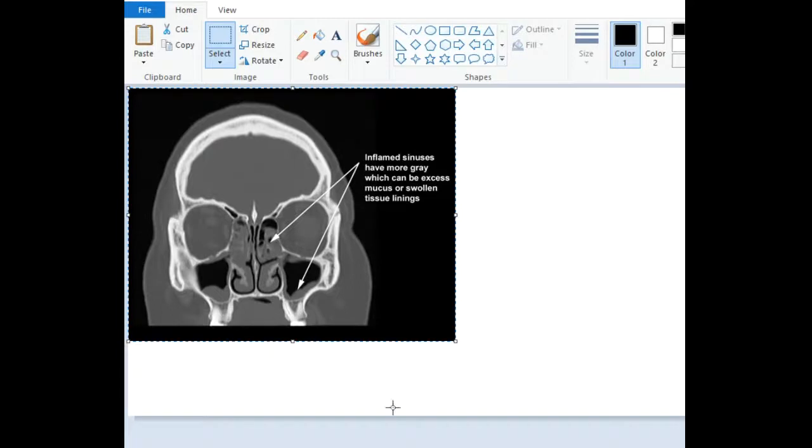So this is the CT scan, non-contrast CT scan which is showing the inflamed sinuses. Here, you can see that normally this black color is the air but here this sinus is filled with pus and there is thickening or mucosal thickening is also seen in this sinus. So this is about chronic sinusitis.